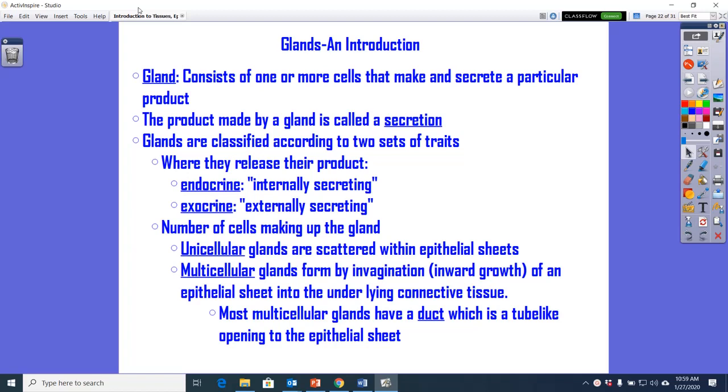If you remember back to simple cuboidal tissue made up of simple cuboidal cells, the property of those individual cells were secretion and absorption. If you put groups of those cells together, you can create something called a gland. A gland is going to make something for the body, whether that is a hormone or whether that is sweat or whether that is oil.